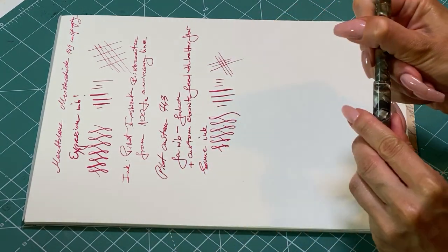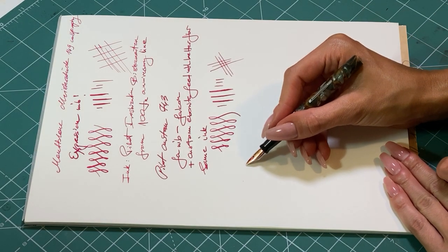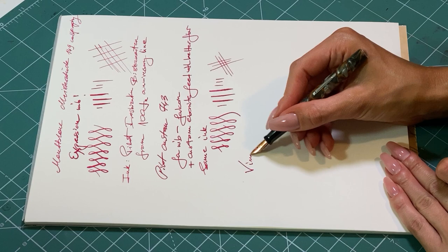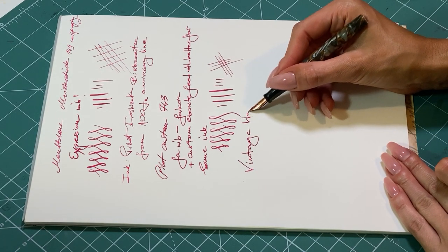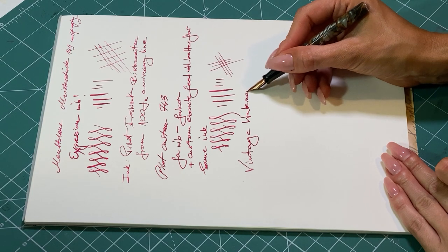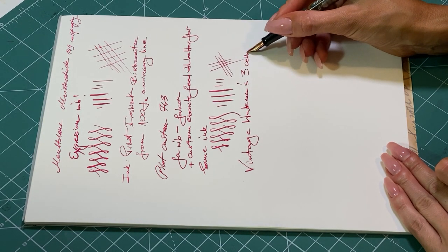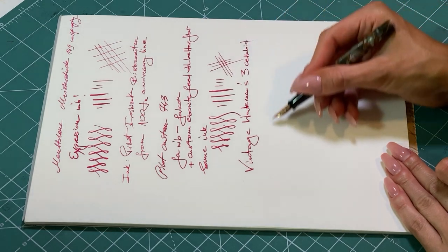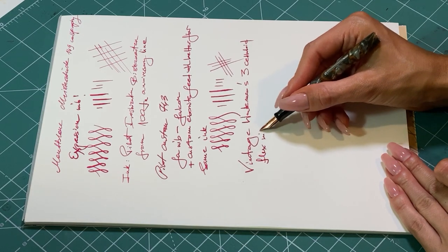And the last one is Vintage Waterman 3, a celluloid pen with much smaller but much more flexible nib. The pressure which is needed to flex it from fine to triple B is like 50% of the pressure needed for Montblanc.